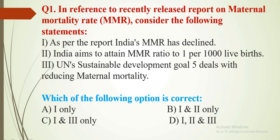Let's begin with question number 1. Consider the following statements regarding maternal mortality rate, on which a recent report has been released. Statement 1: India's MMR (maternal mortality rate) has declined. Statement 2: India aims to attain an MMR ratio of 1 per 1000 live births. Statement 3: UN's Sustainable Development Goal 5 deals with reducing maternal mortality. Choose the correct option.